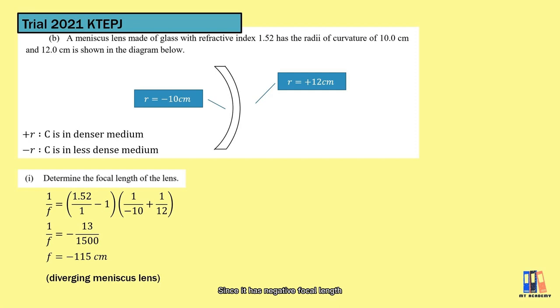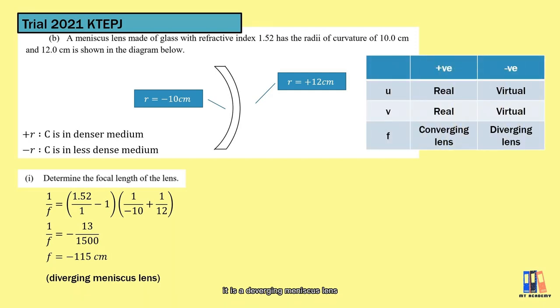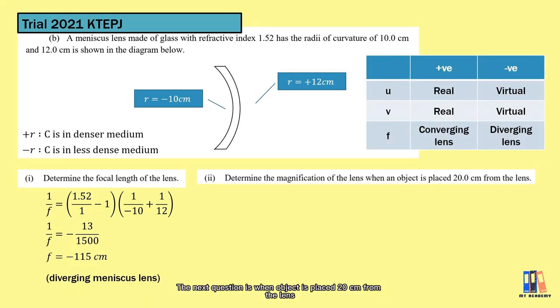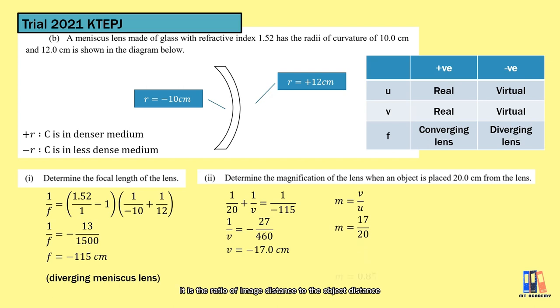Since it has negative focal length, it is a diverging meniscus lens. The next question is when the object is 20cm from the lens, we should apply the thin lens formula and we can get the image distance is negative 17cm, which is at the same side as the object. Lastly is the magnification, it is the ratio of image distance to the object distance, it is equal to 0.85.